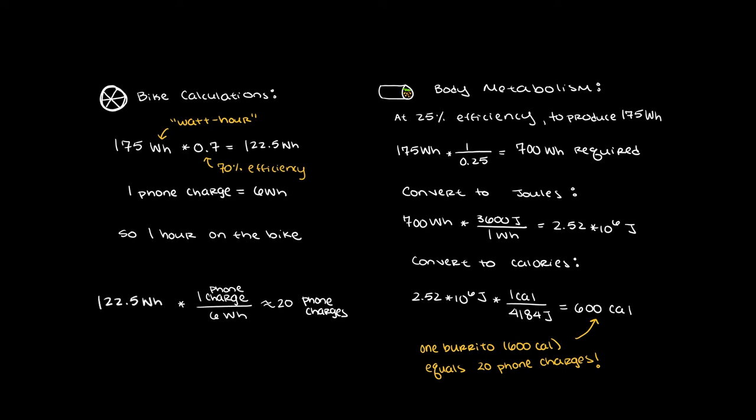Wow, that's exactly one burrito. So, if you eat one 600 calorie burrito, you can produce enough mechanical energy from the food you eat to charge your phone 20 times.